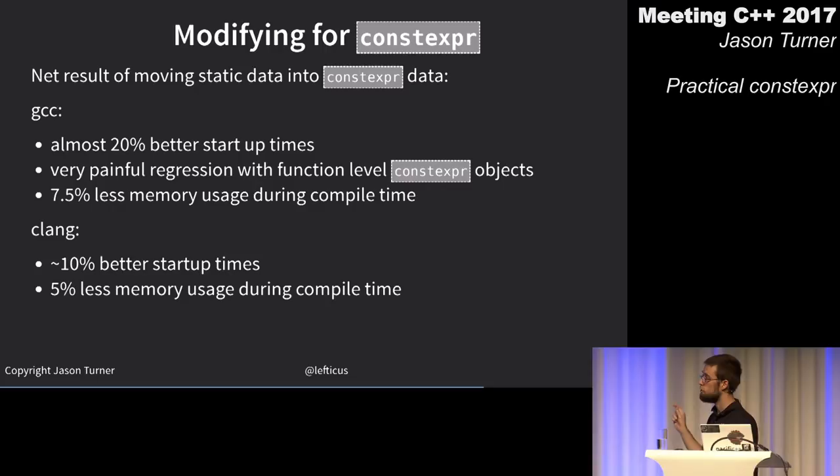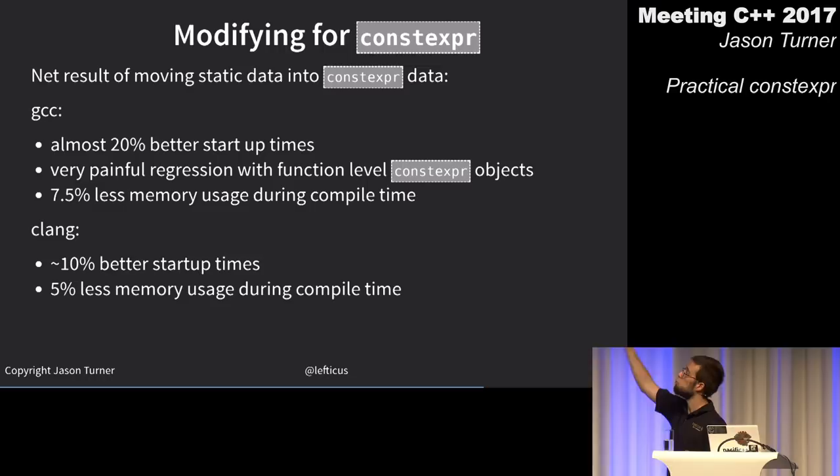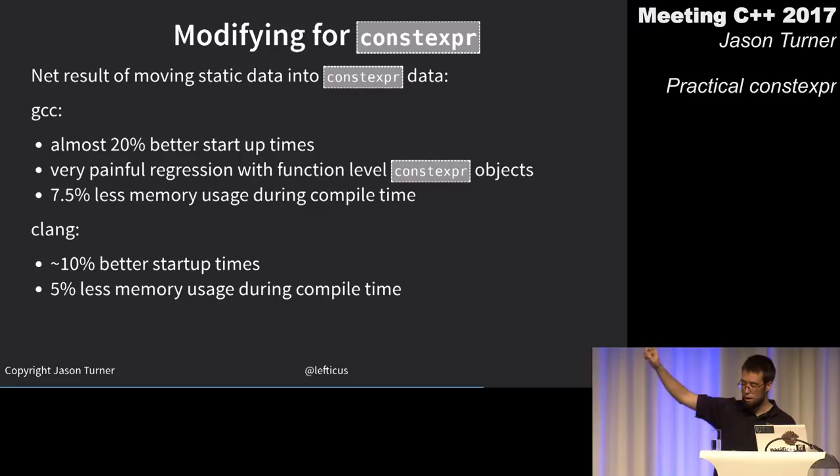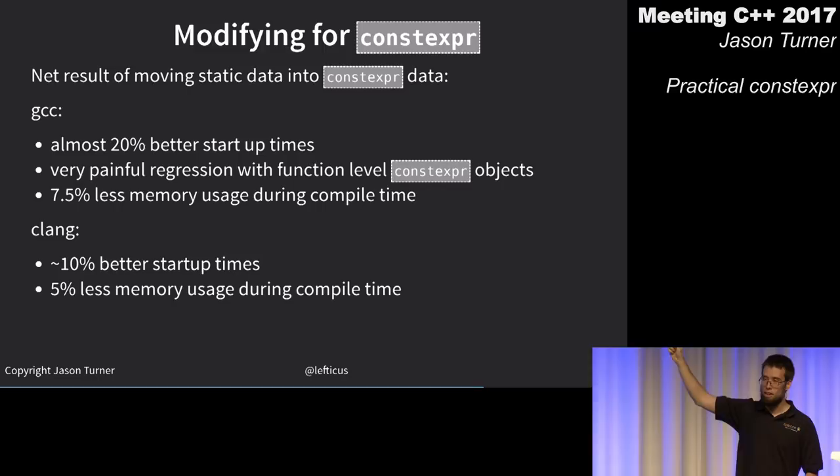After moving objects from static const local variables into static constexpr member variables, I'm now at 20% better startup times for the ChaiScript engine — with a very painful regression that took hours to figure out — and still about 7.5–8% less memory usage during compile time.